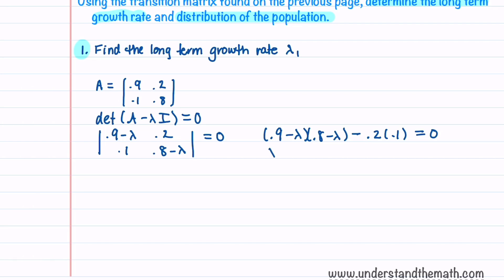Multiplying everything out, we have λ² - 1.7λ + 0.72 - 0.02 = 0. This gives us λ² - 1.7λ + 0.7 = 0. We can actually factor this without using the quadratic formula, and we have (λ - 0.7)(λ - 1). This gives us λ = 0.7 and λ = 1.